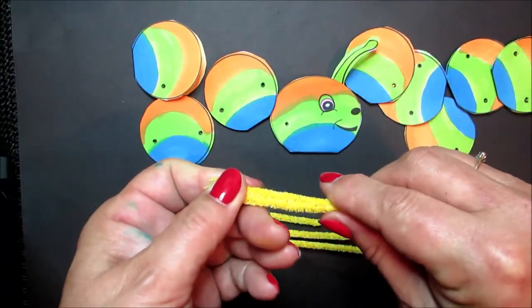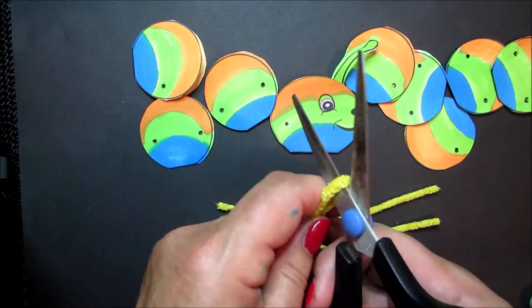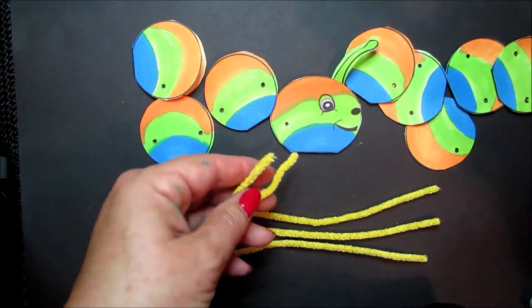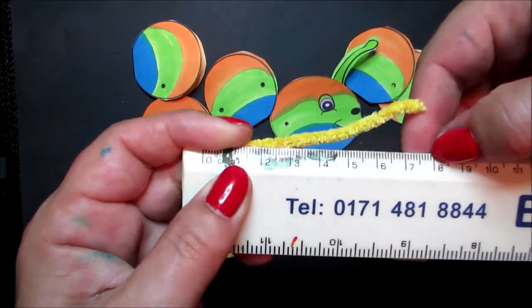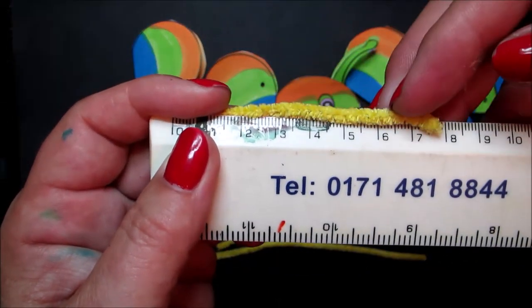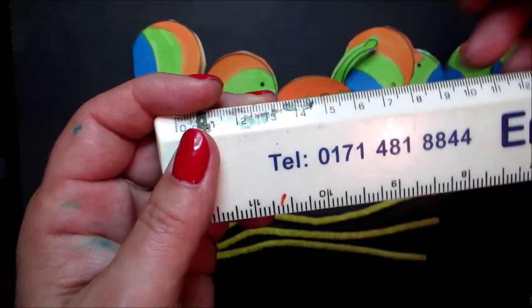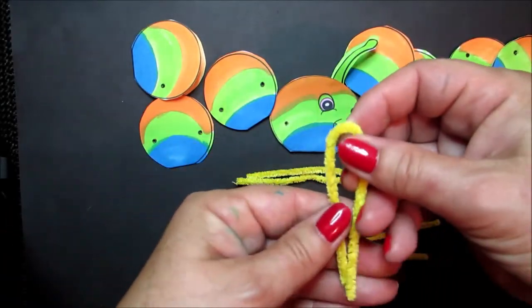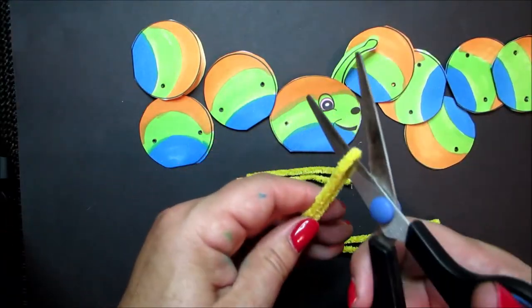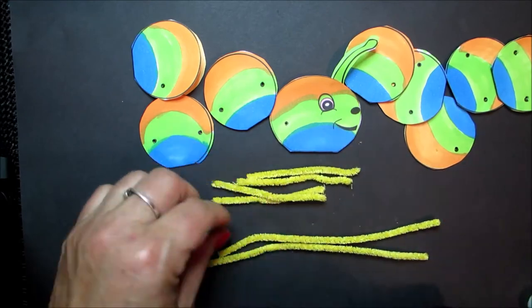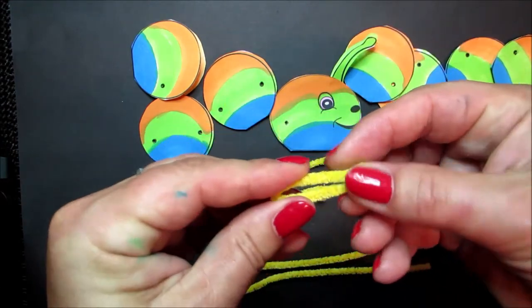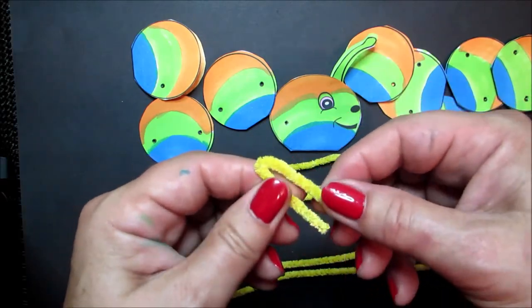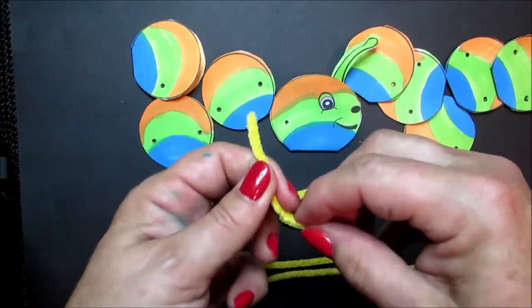Now take one of your pipe cleaners, fold it in half and cut it into two pieces. Each piece should measure about eight centimeters. So let's do this to four pieces of pipe cleaner. And then to each cut piece, fold it in half like this.